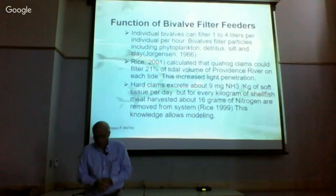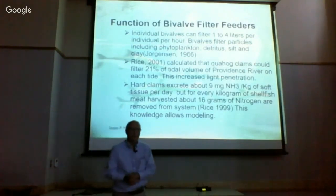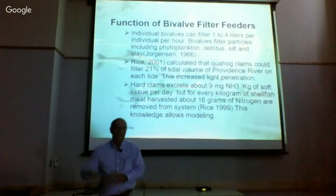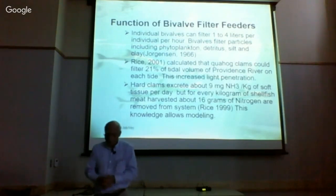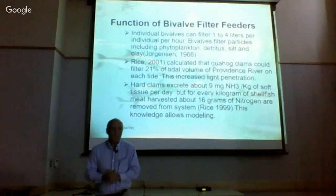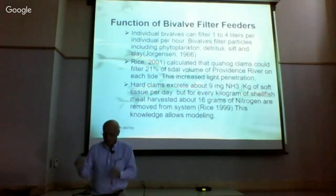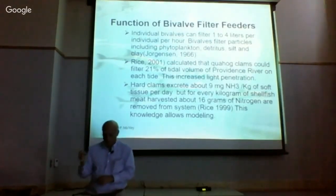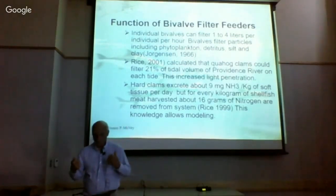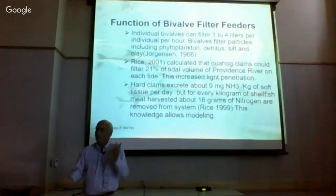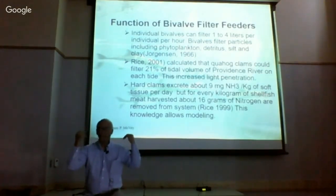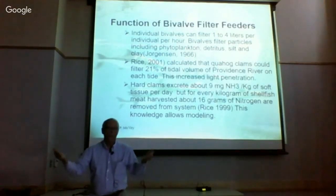Science has documented that created wetlands and submerged aquatic vegetation have ecological functions including stripping nutrients as water passes through marshes. In Europe, individual bivalves filter 1 to 4 liters of water per hour. We also know that 9 milligrams of NH3 nitrogen is excreted from plants per day, but for every kilogram of shellfish harvested, 16 grams of nitrogen are removed from the system. Knowing these relationships lets us determine how much nitrogen we can extract and model nitrogen flows through a system.